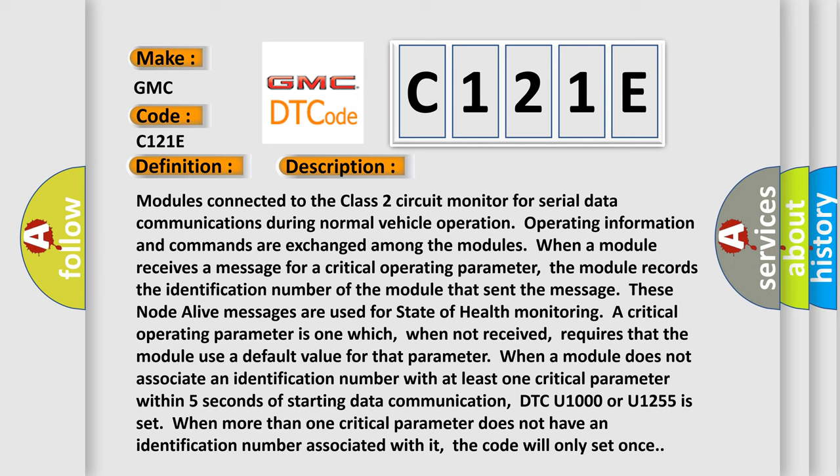When a module does not associate an identification number with at least one critical parameter within five seconds of starting data communication, DTC U1000 or U1255 is set. When more than one critical parameter does not have an identification number associated with it, the code will only set once.